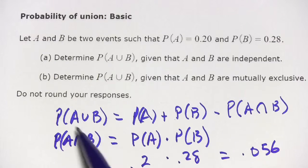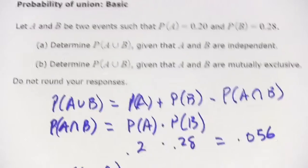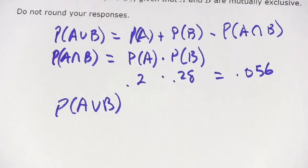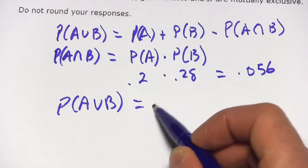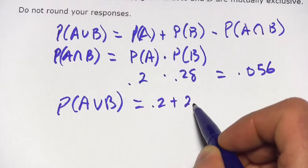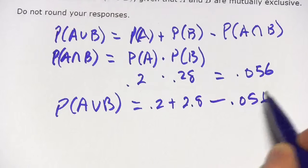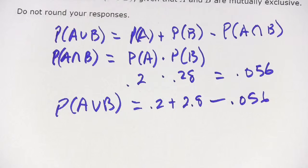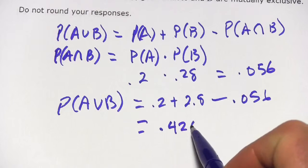Now we can use this addition formula. So the probability of the union of A and B is 0.2 plus 0.28 minus 0.056, the probability of the intersection. And when you crunch the numbers on that, it should come out to 0.424.